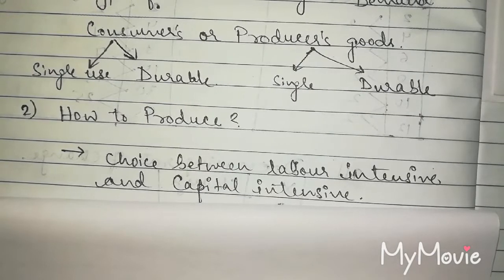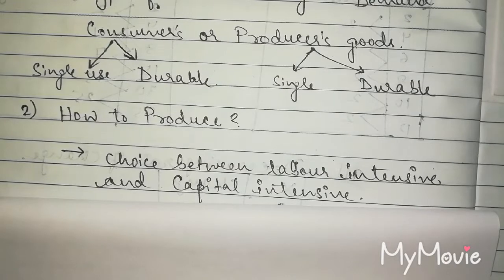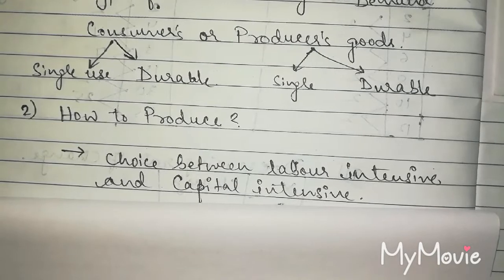Consumer goods or producer goods, I have told you, there are two types of goods. One is single use and one is durable. Consumer goods are single use and durable. And producer goods are single and durable. This example we will see ahead when we do types of goods.